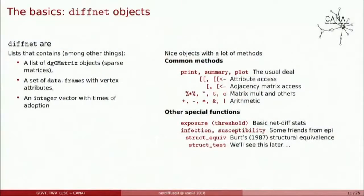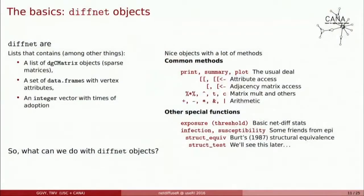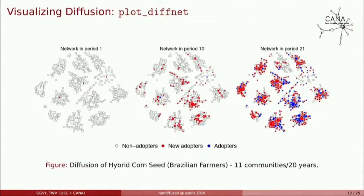One thing to notice is that while most functions are built to work with DiffNet objects, you can also use them with other classes of objects, namely matrices. So if you don't want to work with the DiffNet object itself, you can work with your usual matrix array or sparse matrix.